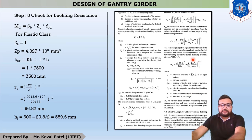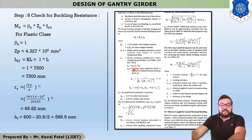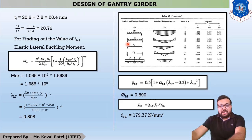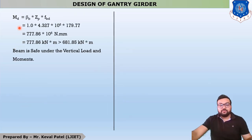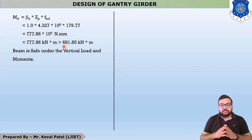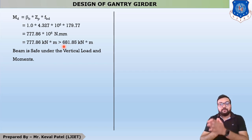With MCR known, λLt can be calculated, then φLt, then χLt, then FbD, and finally MD. After calculating all values, the final answer for MD is 777.86 kNm, which is greater than the maximum bending moment. Therefore, the selected section is safe in shear, bending moment, and buckling resistance.